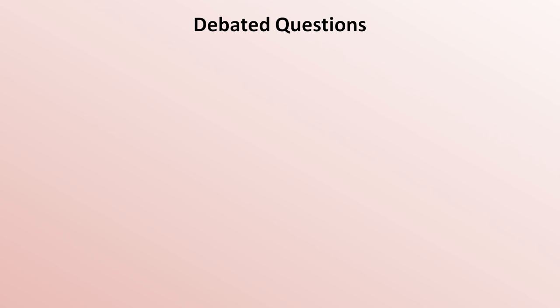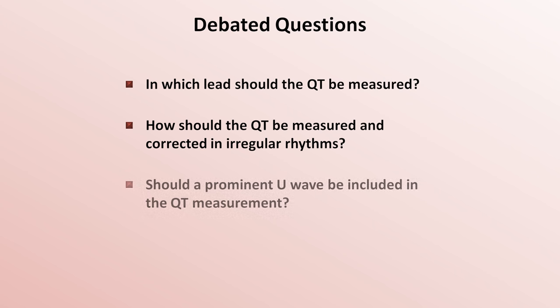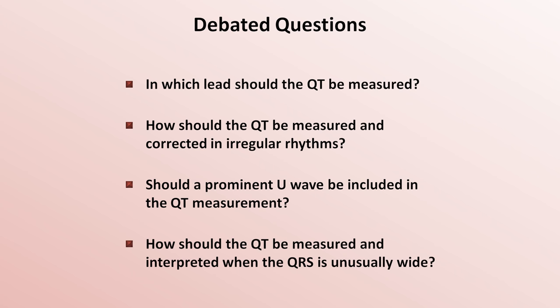In addition to the adjustment of the QT interval to account for the heart rate, there are several other debated questions about its measurement. For example: in which lead should the QT be measured? How should the QT be measured and corrected in irregular rhythms? Should a prominent U wave be included in the QT measurement? And how should the QT be measured and interpreted when the QRS itself is unusually wide?